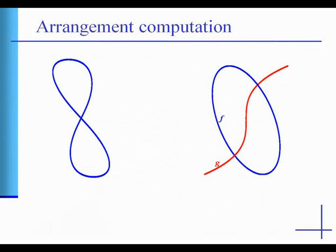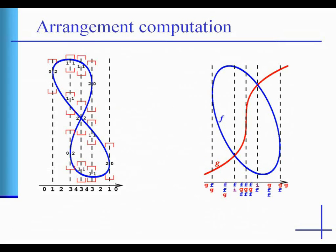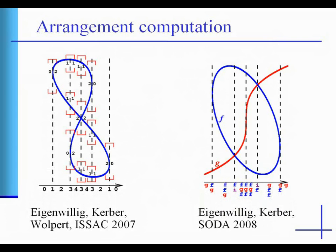The single curve analysis computes geometric information at the critical positions of the curve. The curve pair analysis captures the vertical ordering of two curves at critical positions. Recently, Eigenwillig, Kerber, and Wolpert proposed algorithms for both types of analysis.